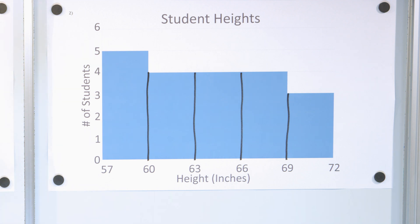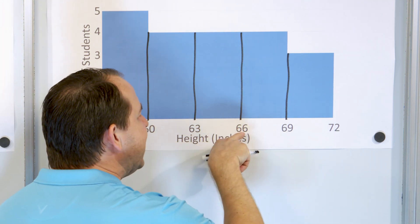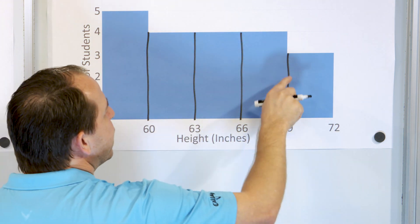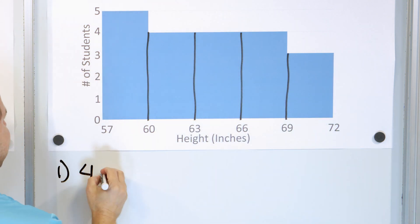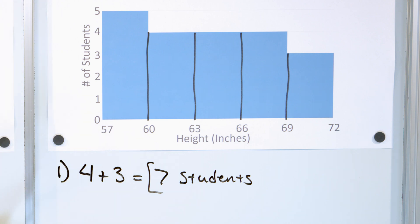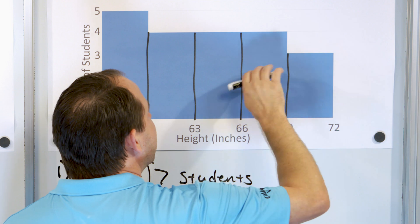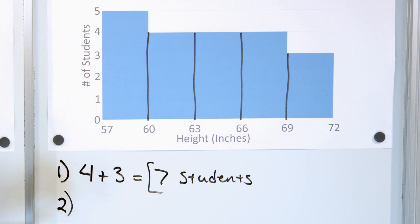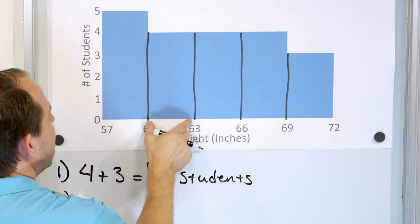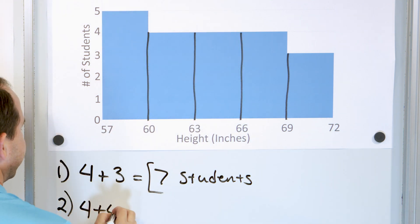Question number one: how many students are 66 inches or taller? I go to 66 inches on the axis, and everything taller goes to the end of the chart. From 66 to 69 inches I have four students, and from 69 to 72 inches I have three more students — so the answer is seven students. Question number two: how many students are between 60 and 66 inches? Between 60 and 63 is four, and between 63 and 66 is another four. Adding those together gives eight students.